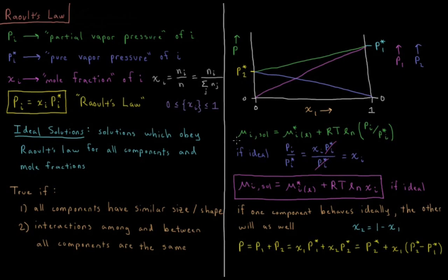From the previous video on chemical potential of solutions, the chemical potential of component I in solution equals the chemical potential of pure liquid I plus RT times the natural log of P_I divided by P_I star. For an ideal solution, substituting Raoult's Law gives P_I equals chi_I times P_I star, so the ratio P_I over P_I star equals chi_I. Therefore, the chemical potential of component I in an ideal solution equals the chemical potential of pure liquid I plus RT times the natural log of chi_I.